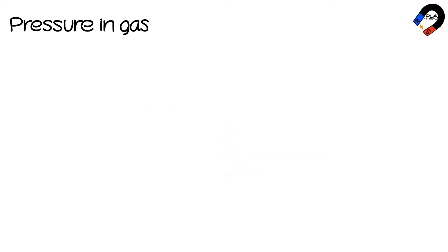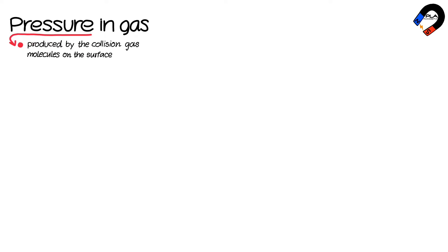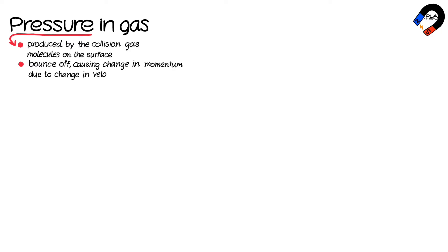Pressure in gas: the pressure of a gas is produced by the collisions of gas molecules on the surface of an object. When gas molecules collide with the surface, they bounce off, causing changes in the momentum of the gas molecules due to changes in their velocity directions.